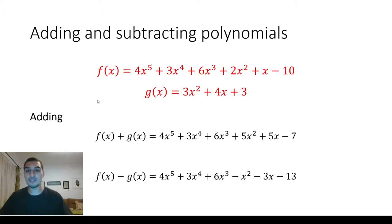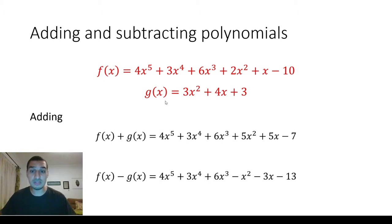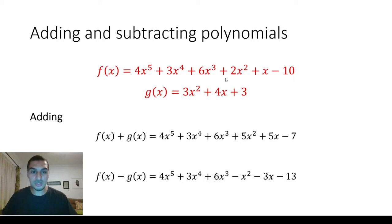The first operation we usually use for polynomial functions is addition and subtraction. For addition and subtraction, you look for terms with the same power and add their coefficients. For example, with f(x) and g(x), terms like x^5, x^4, x^3 only in f are unaffected. Where both polynomials have matching terms: 2+3=5, 1+4=5, and -10+3=-7. For subtraction: 2-3=-1, 1-4=-3, -10-3=-15. It's pretty simple and can be done by hand.